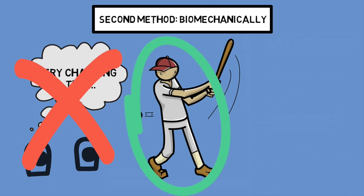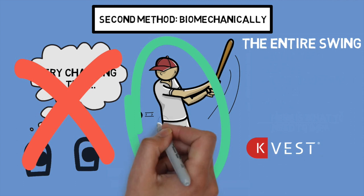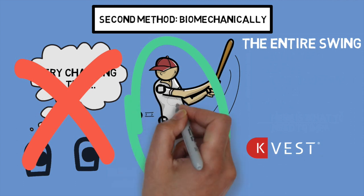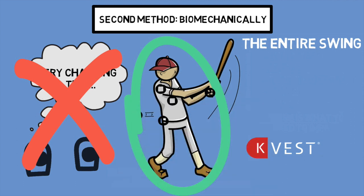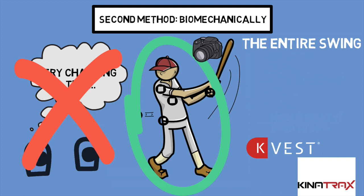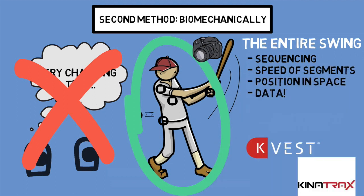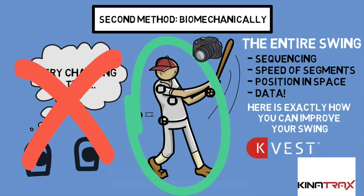There is also tech out there that tracks the way the body moves throughout the swing, with the two main players being KVest — made up of four sensors placed on key points of the body — and Kinetrax, which is a video-based motion capture system. The idea with this tech is to, objectively, look at the way the body moves during the swing. This data can tell you the sequence that the player is firing different segments of their body, how fast those segments are firing, and where they are in space along the way — all of which can be used to help create a better swing.